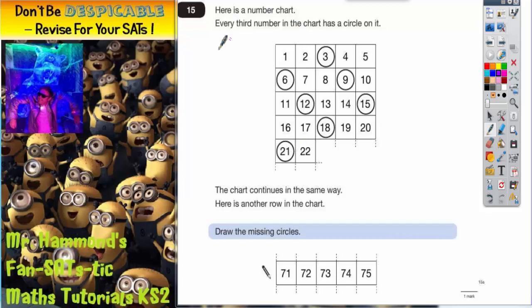Question 15. Here is a number chart. Every third number in the chart has a circle on it.